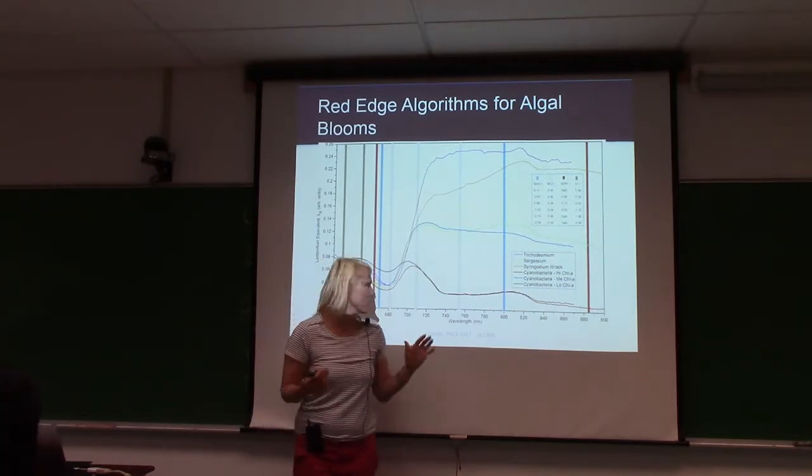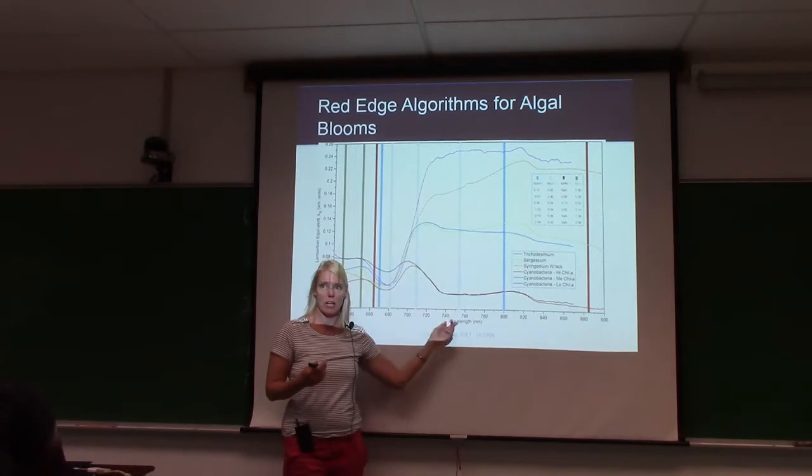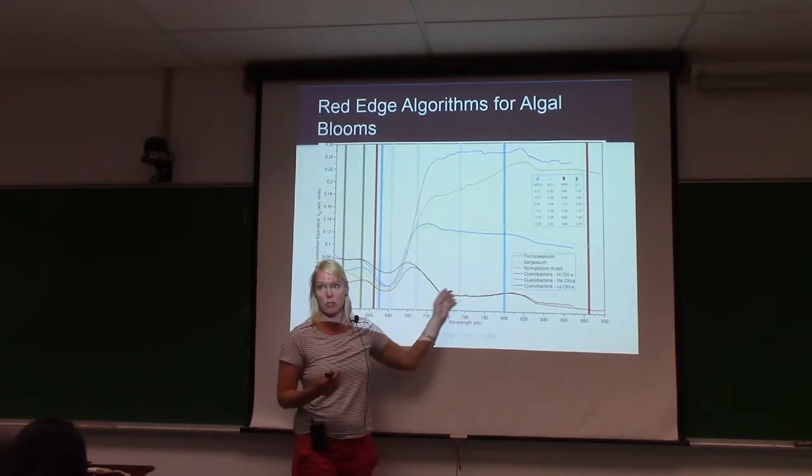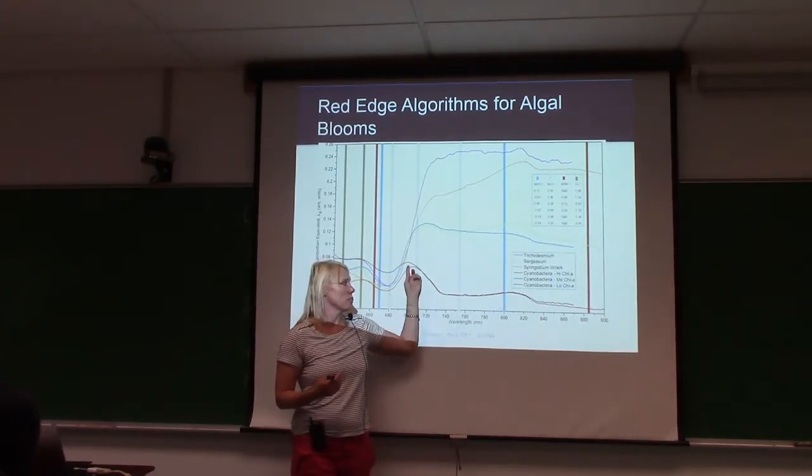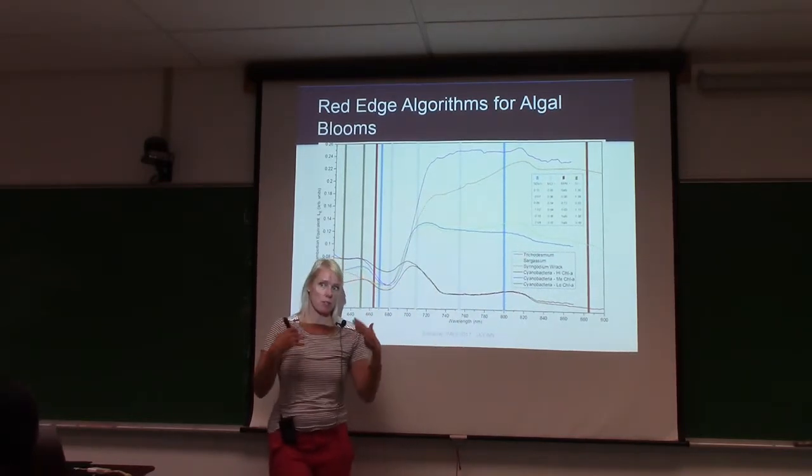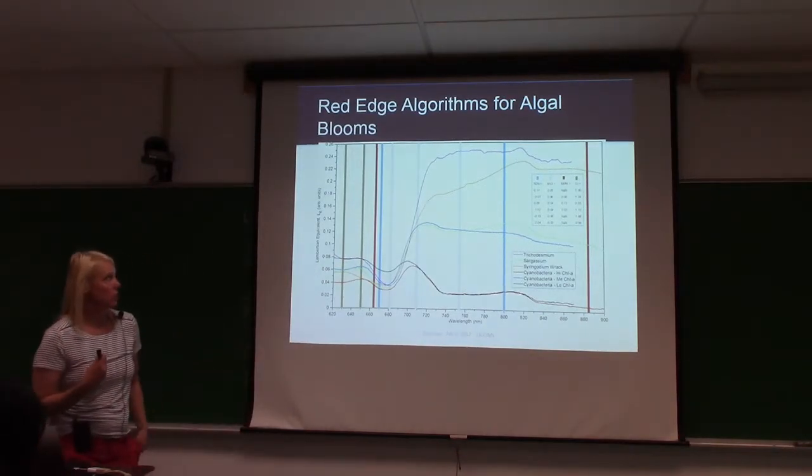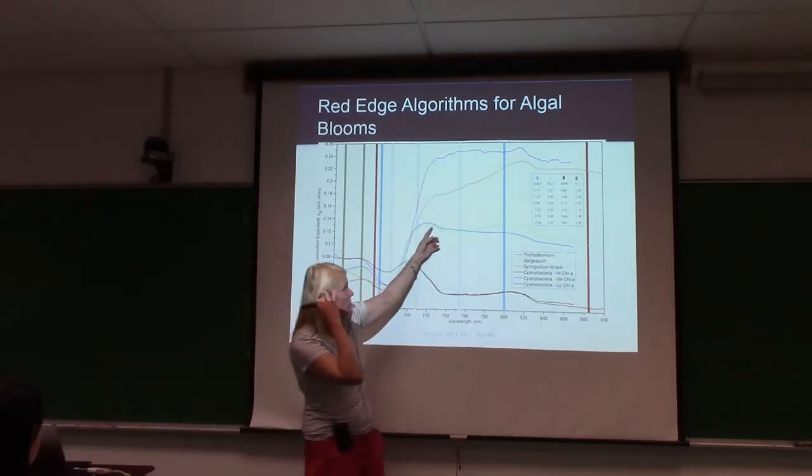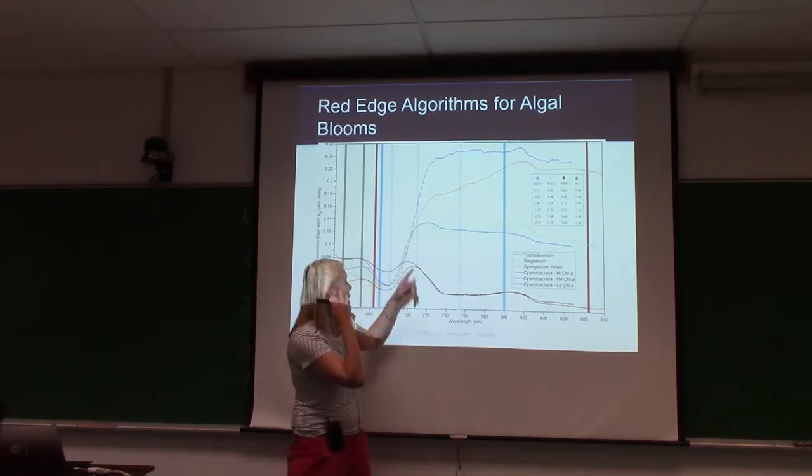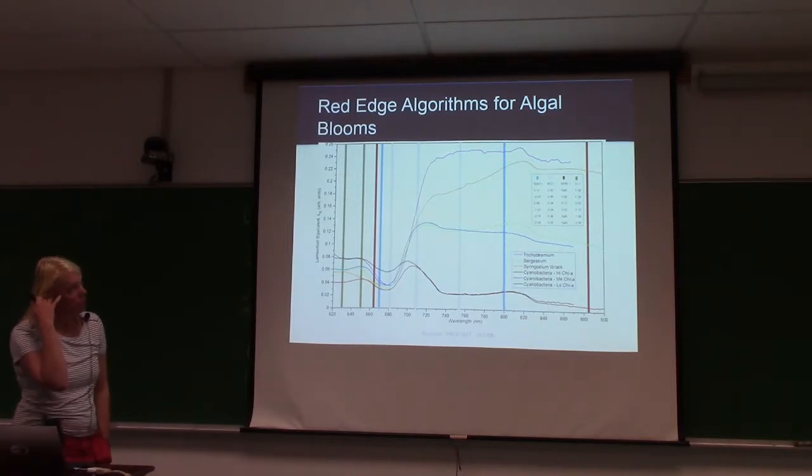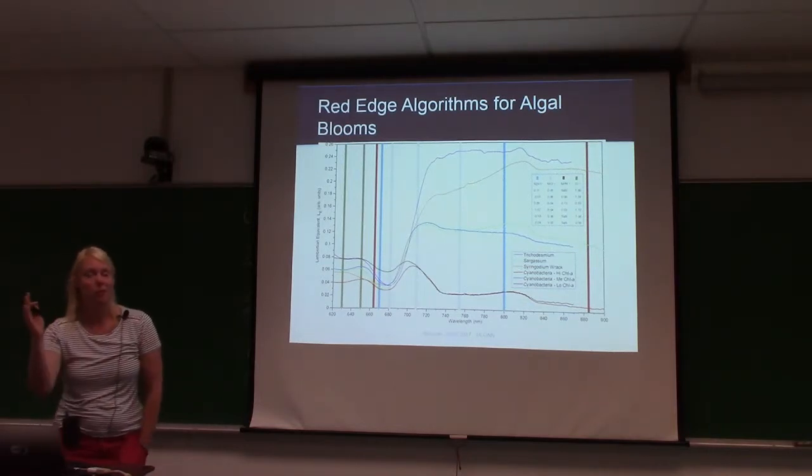So, our follow-on ocean color doesn't do anything here. So, we can't really do a lot of cool in-water work without these bands. But PACE will have bands all the way out. So, you know, can we come up with an algorithm that says this is a floating mat that's submerged and this is a floating mat that's at the sea surface and very bright. Are there different manifestations like Trichodesmium? That one was floating, obviously, at the surface. Sargassum and Syringodium wrack.